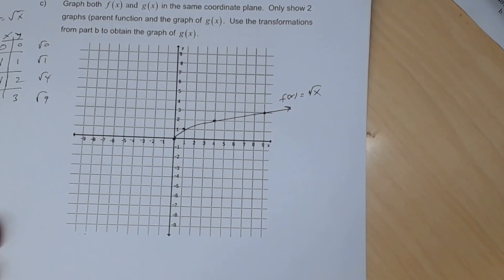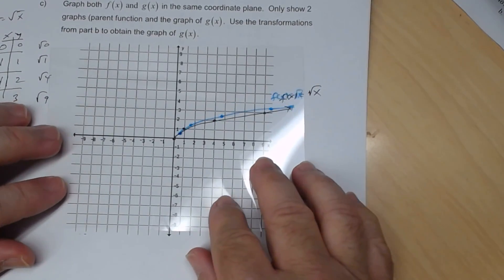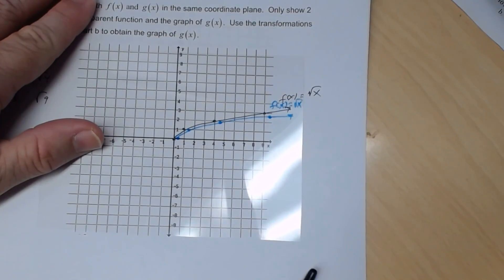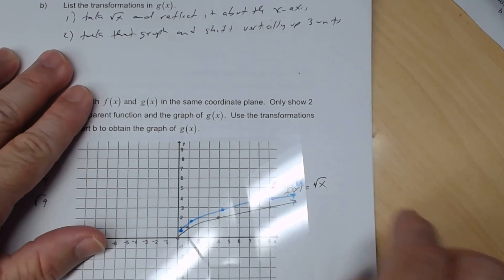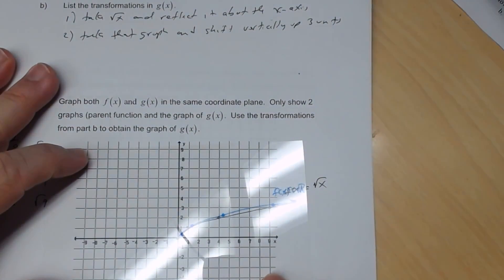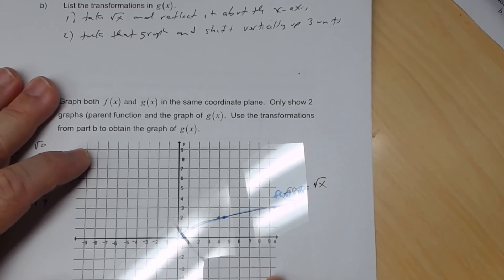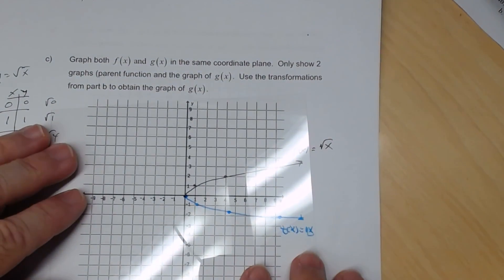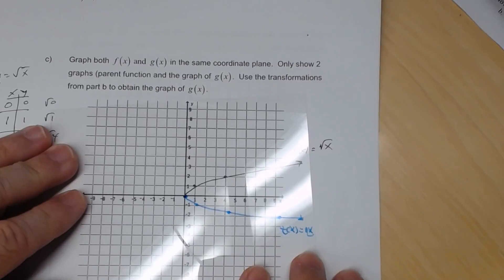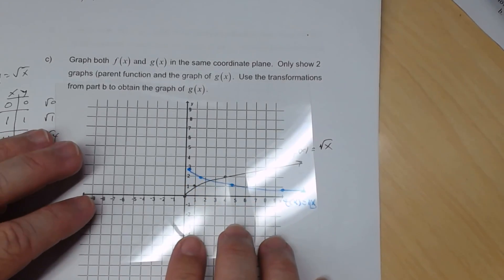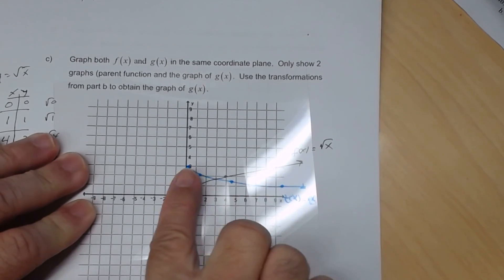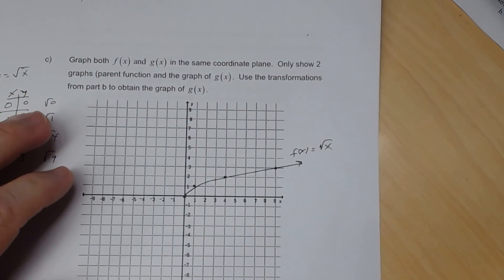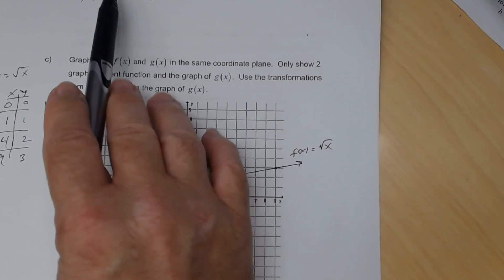So basically we've done the parent function. I'm going to take that graph and reflect it, then shift it up three units. This will be the square root function and this will be the g of x function. We've got to use those points and do those transformations on them.